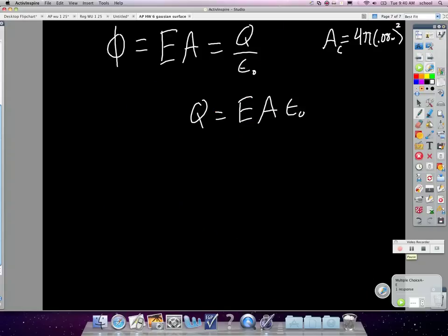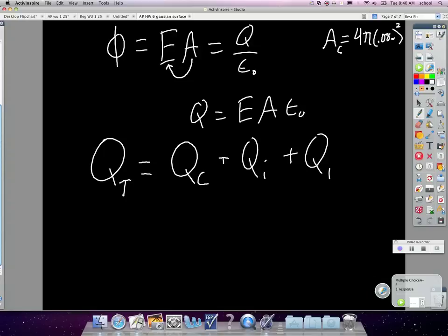And likewise, you're going to use the same logic to calculate the other charge. And remember that the total charge, the total charge on the sphere is going to equal the charge on the center plus the charge on the inside plus the charge on the outside or the external surface. Does that make sense? This is going to cancel out with that because they're opposite. They're equal in magnitude, opposite in value.